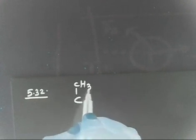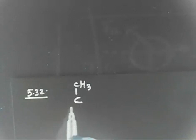Let us discuss problem 5.32. We have to draw the enantiomeric structure for the following molecules. If the enantiomer is not possible, you don't have to write it. For the first molecule, we have CH3 here.